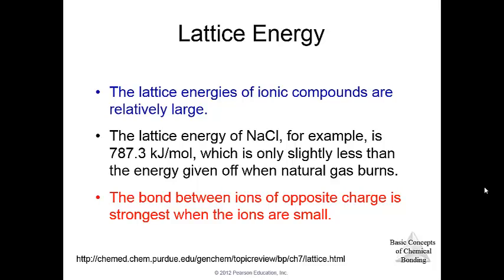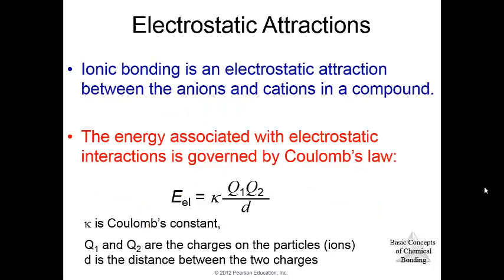Overall, lattice energies of ionic compounds are pretty large. The lattice energy for sodium chloride is 787.3 kilojoules per mole, which is only slightly less than that given off when you burn natural gas. The bond between ions of opposite charge is strongest when the ions are small. If the ions are small, then the distance is small, and this is a larger number, but it's negative, so it's a more negative potential energy, which is more favorable.